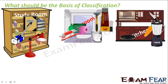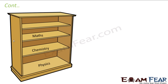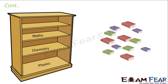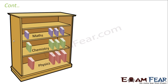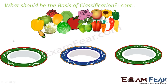For living organisms also, those who share the same characteristics will fall in the same group. For example, if you have your study room with many different books and you want to classify them subject-wise — all the maths books in one rack, chemistry books in another, physics books in a third — everything which shares the same characteristic is placed in the same group.